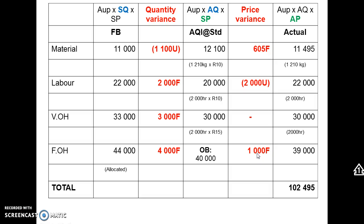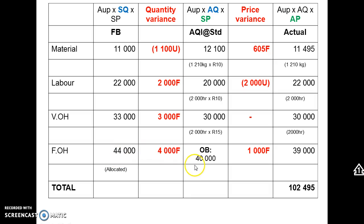Look at the spending variance. The middle column says 40,000 — what was budgeted, so how much should we have paid for factory rental — versus how much we did pay, in this case 39,000. So we saved 1,000 rand. That's the spending variance. On the left-hand side we get the volume variance: 44,000 less 40,000 is 4,000 rand.